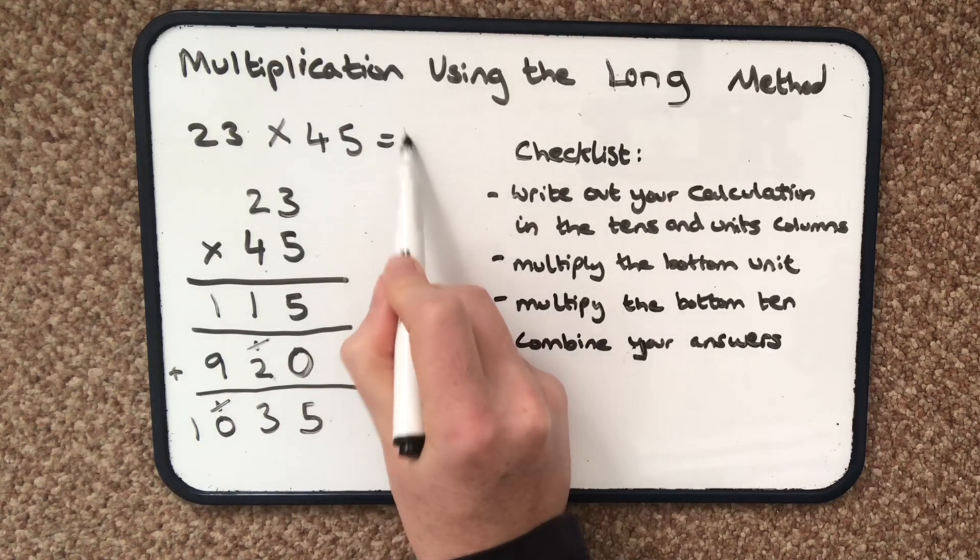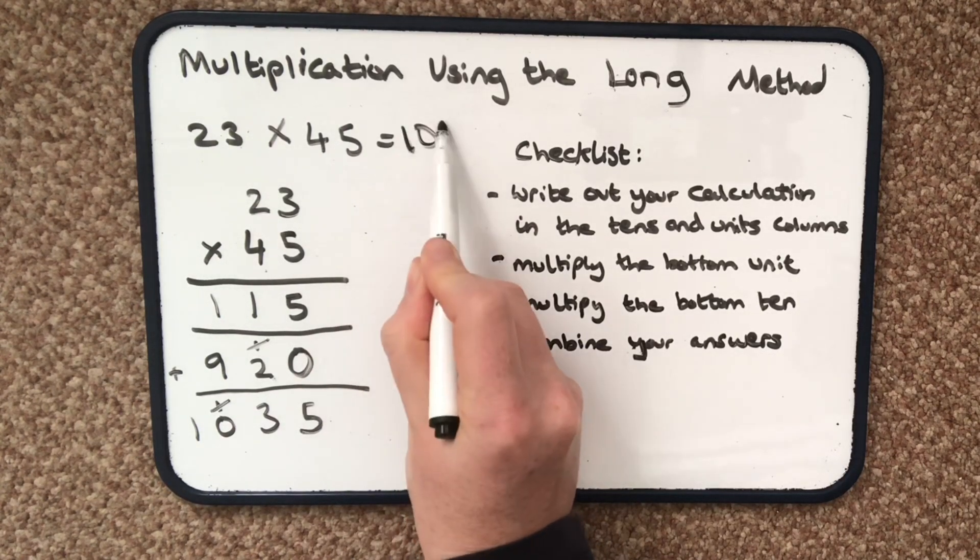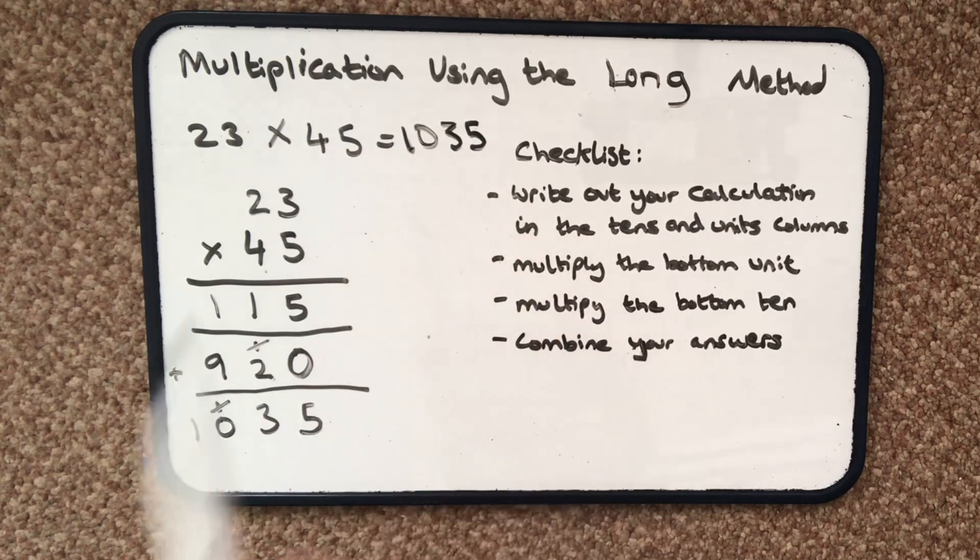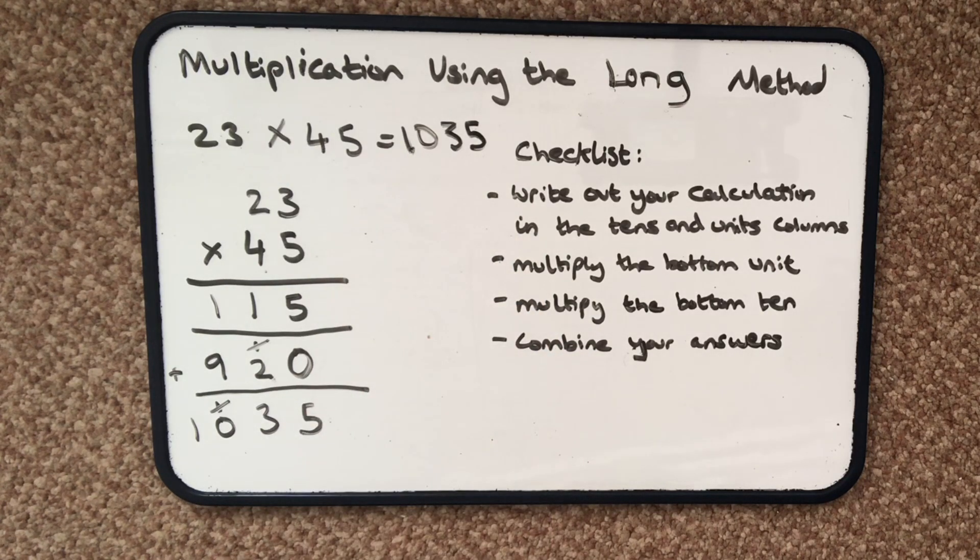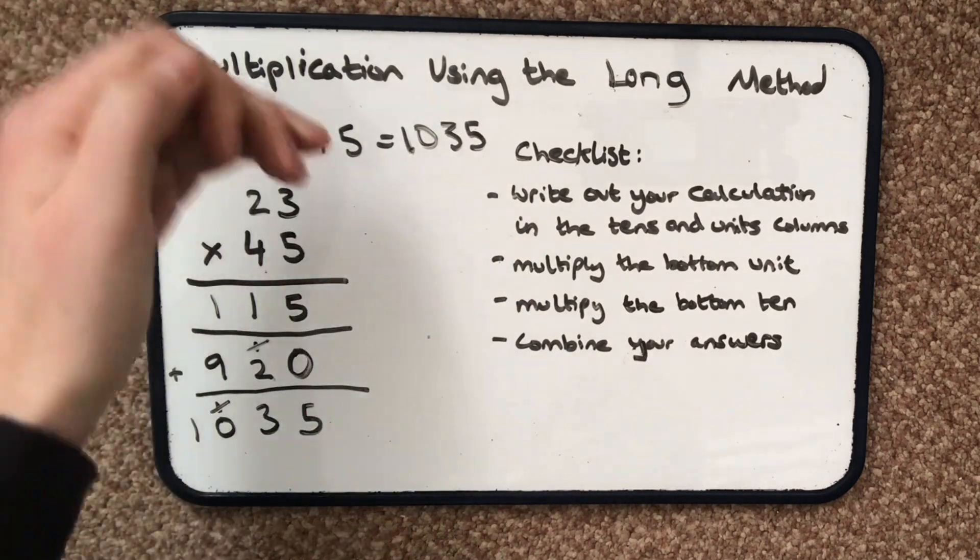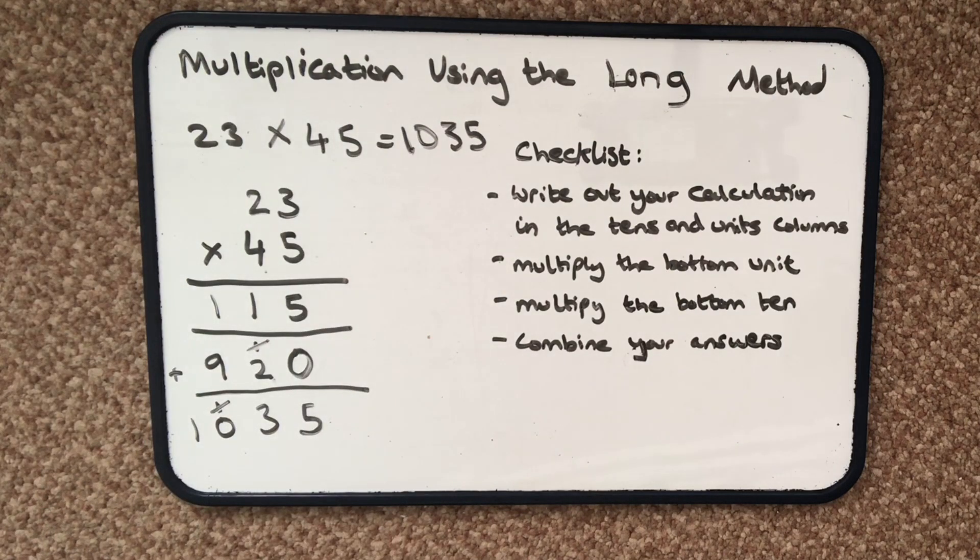So the answer is 1035. That is the long method when you have two digit by a two digit number for multiplication.